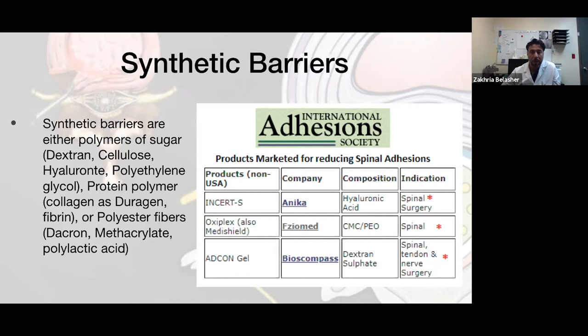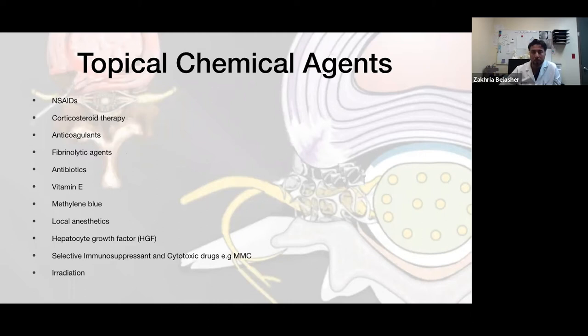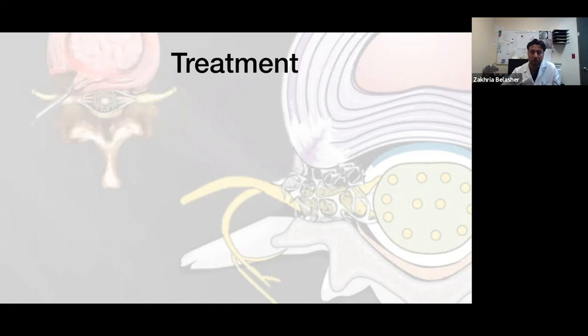Other options being used are topical chemical agents like NSAIDs, steroids, anticoagulants used locally, fibrinolytic agents, local antibiotics, and immunosuppressants. As we went through how fibrosis happens, once we tackle any of those checkpoints, that will affect the scale toward either healing or toward scar. There has also been a trial using irradiation to decrease the chance of fibrosis.